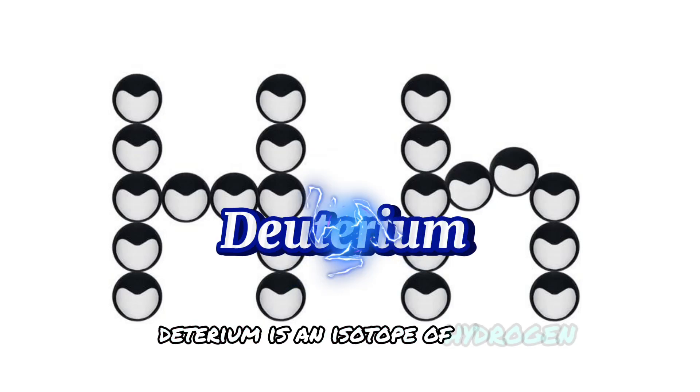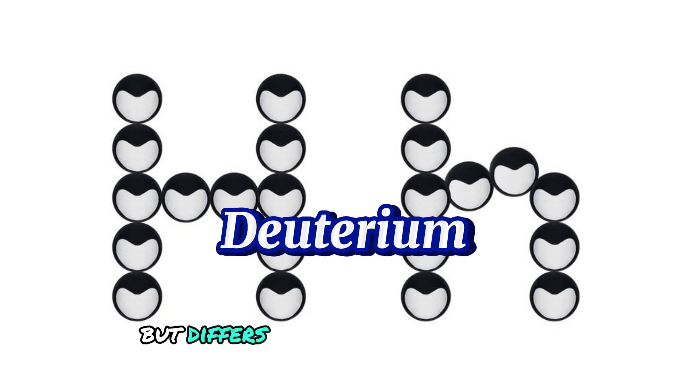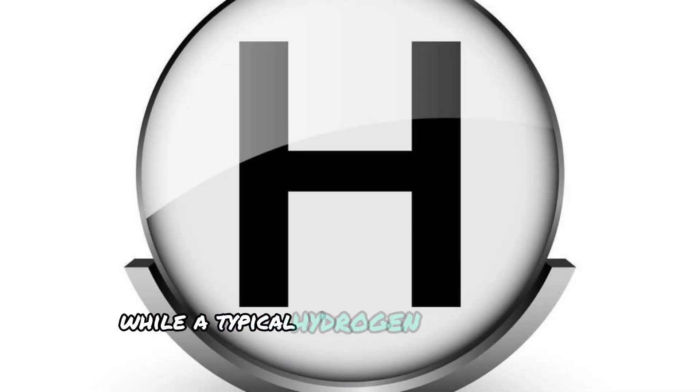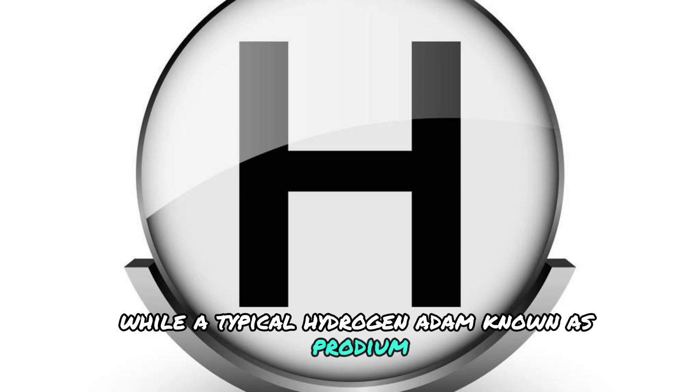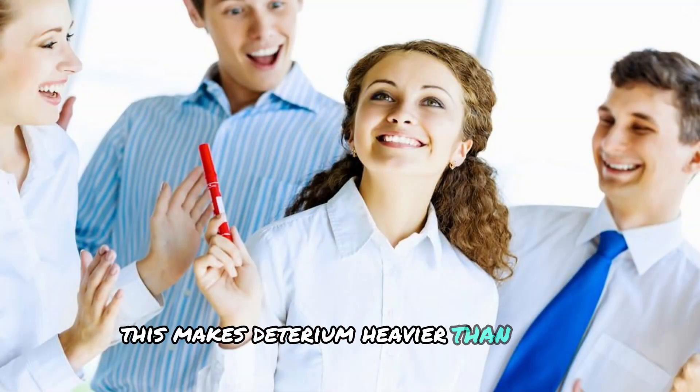Deuterium is an isotope of hydrogen, meaning it has the same number of protons but differs in the number of neutrons. Specifically, while a typical hydrogen atom, known as protium, has just one proton and no neutrons, deuterium has one proton and one neutron. This makes deuterium heavier than protium.